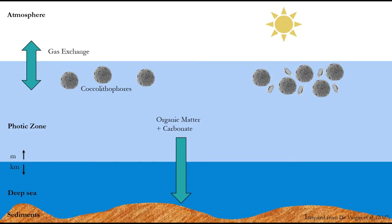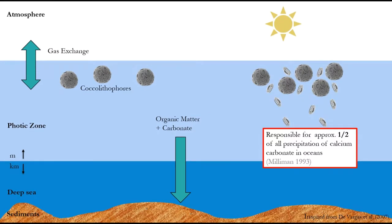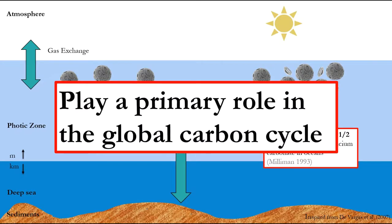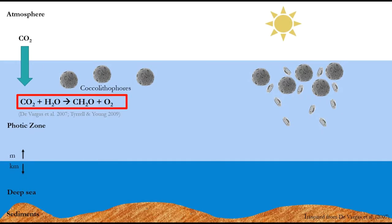Due to their secretion of coccoliths, coccolithophores are responsible for approximately half of all modern precipitation of calcium carbonate in the oceans. Thus, coccolithophores play a primary role in the global carbon cycle. Coccolithophores uptake carbon dioxide during photosynthesis, converting the carbon dioxide to biomass.